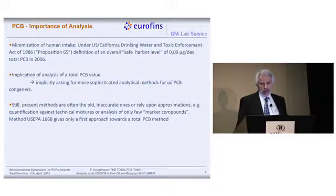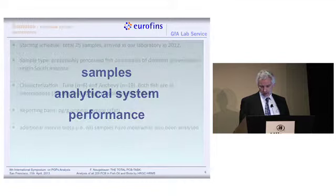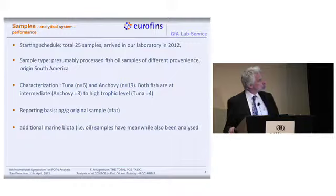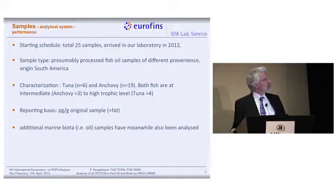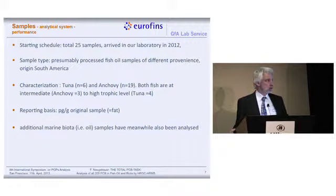We took EPA Method 1668 as a baseline but did not strictly follow it — we used a different GC column for separation, for example. We took fish oil samples; as a commercial lab we sometimes cannot choose what we get, but I was able to identify tuna and anchovy as the fish behind these samples. We took these as a starting project, reporting on a fat basis, original basis, and the same for fish oil, and meanwhile also doing analysis on other biota matrices, mainly marine oils or fish oils.